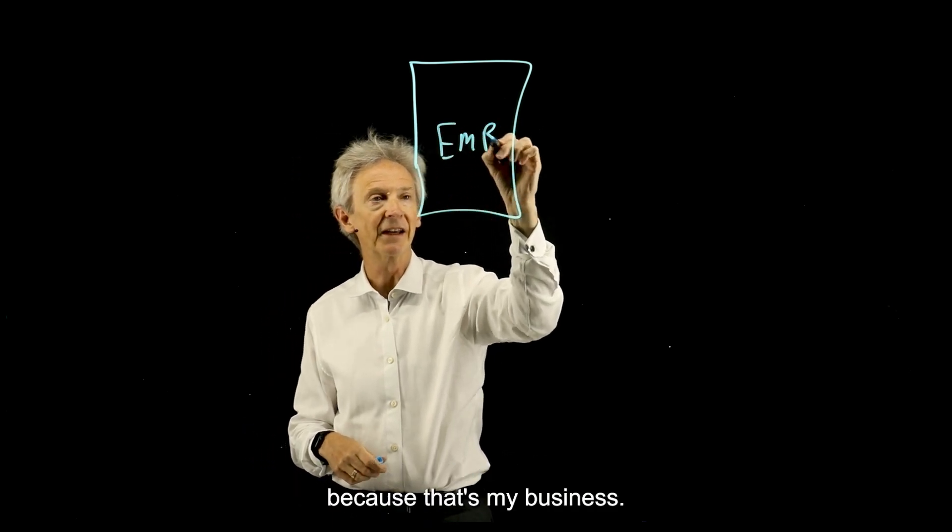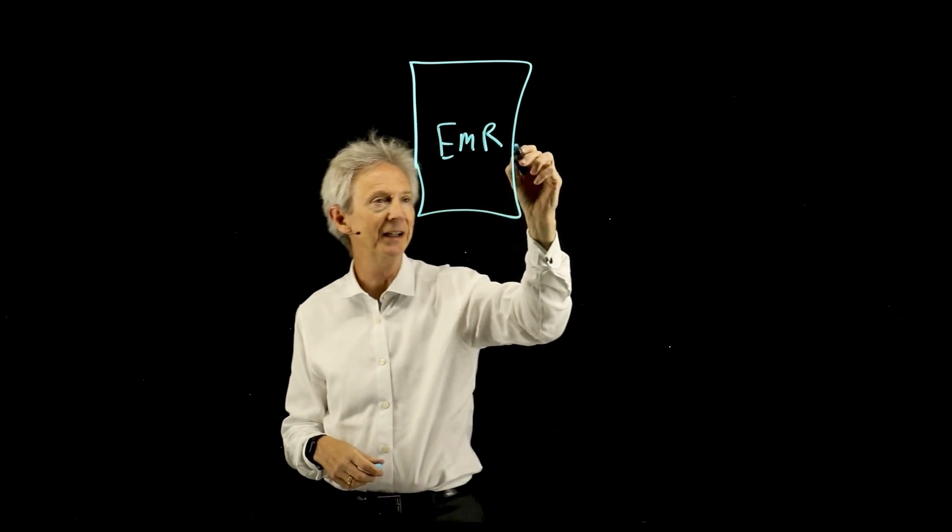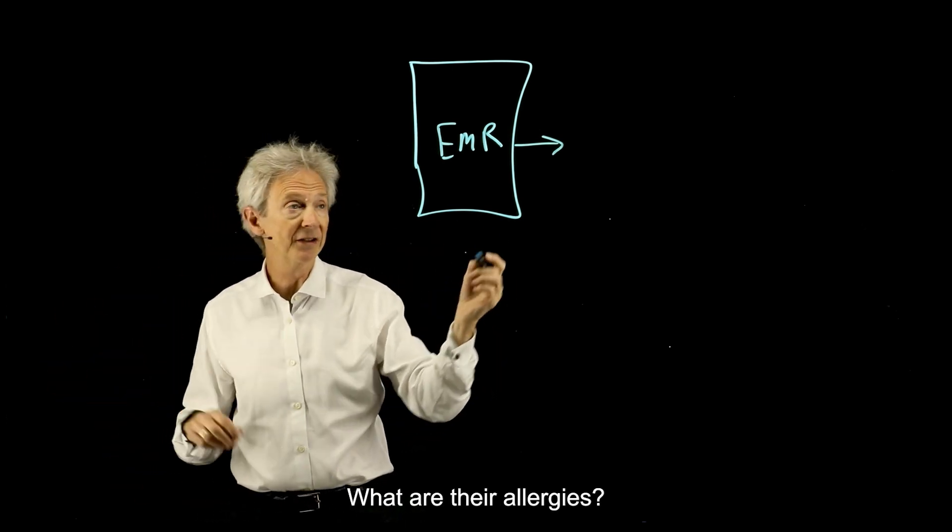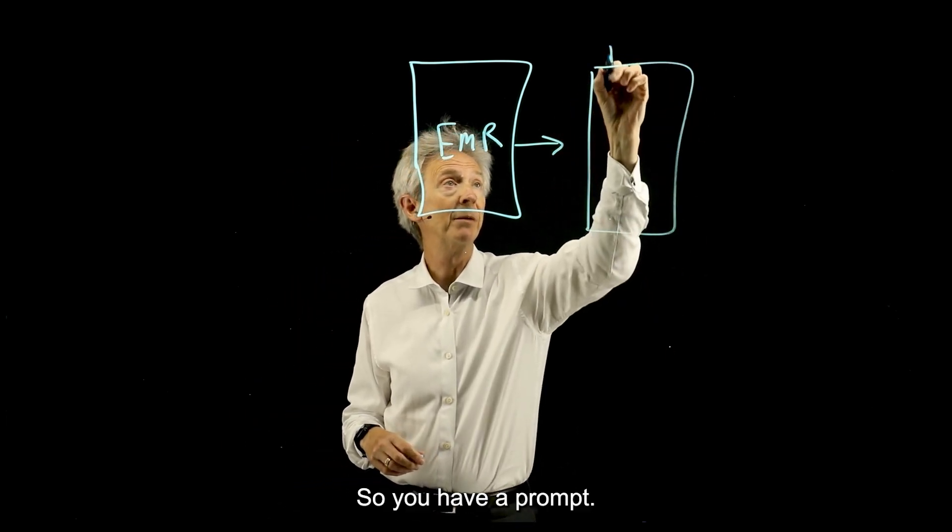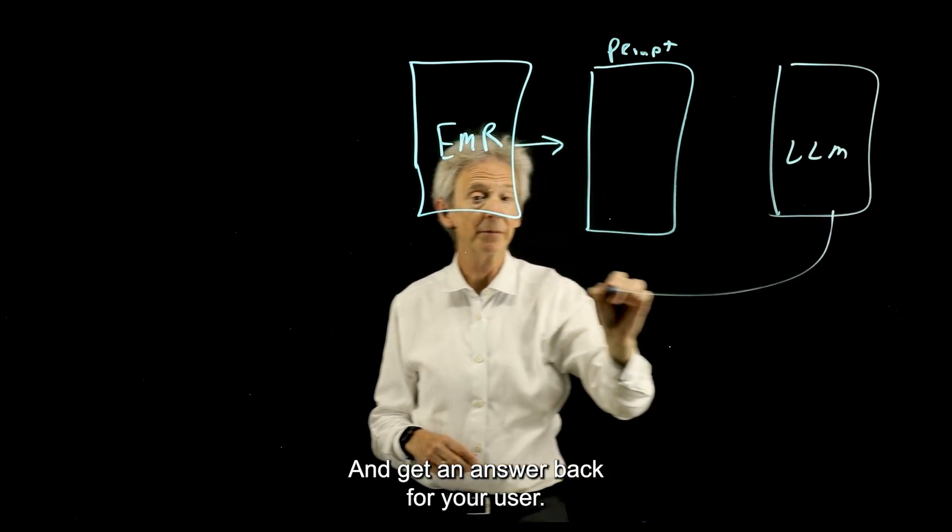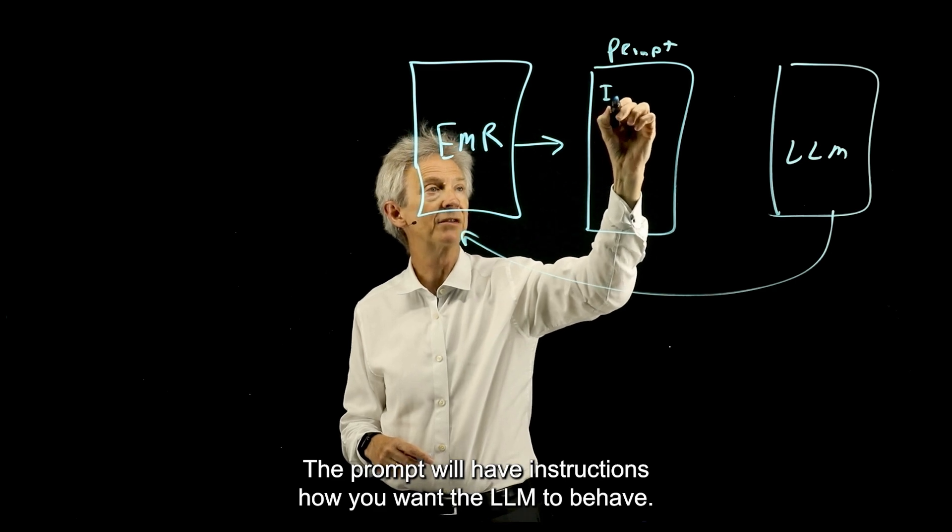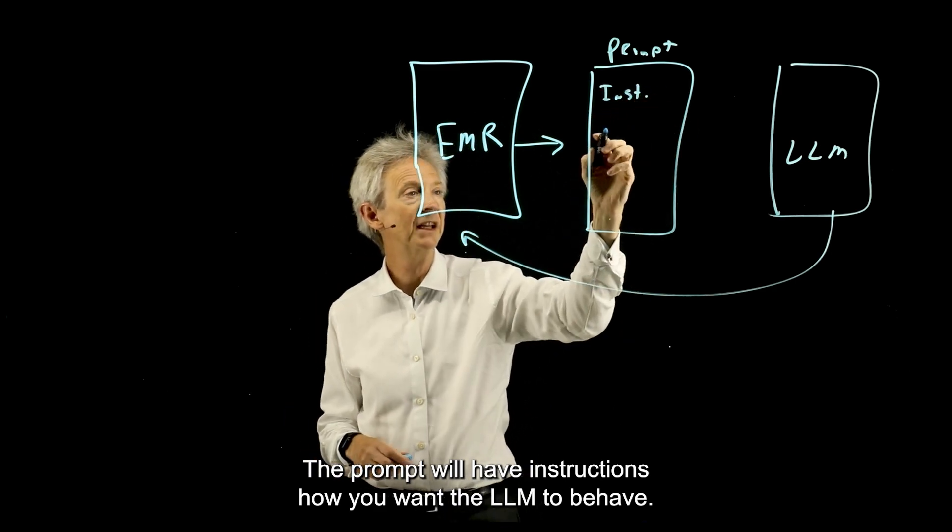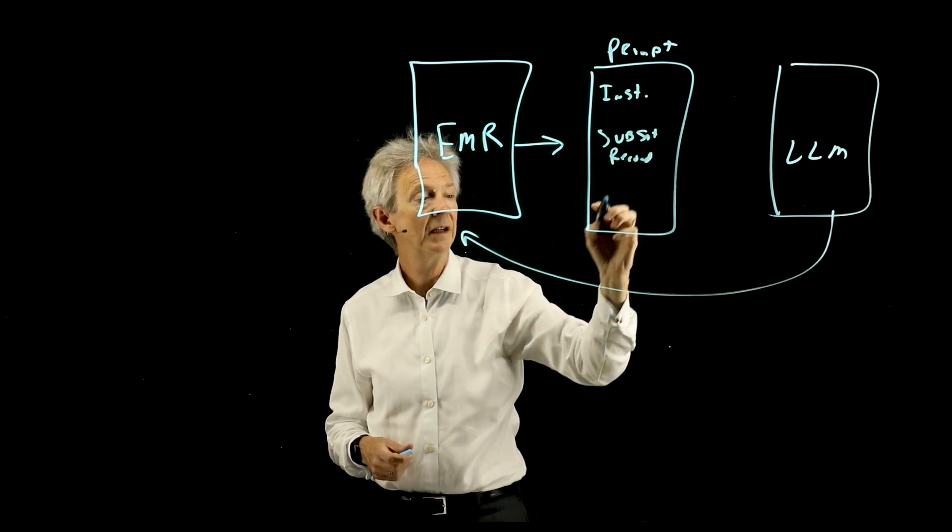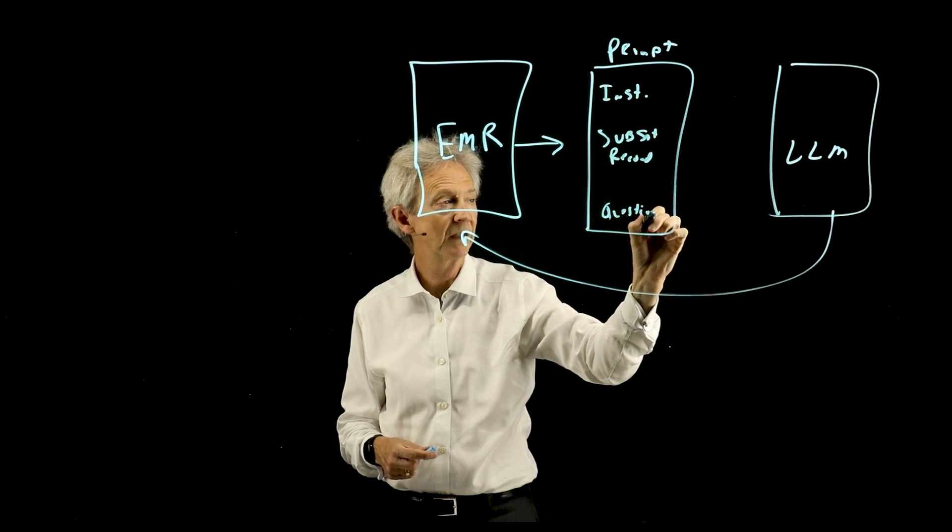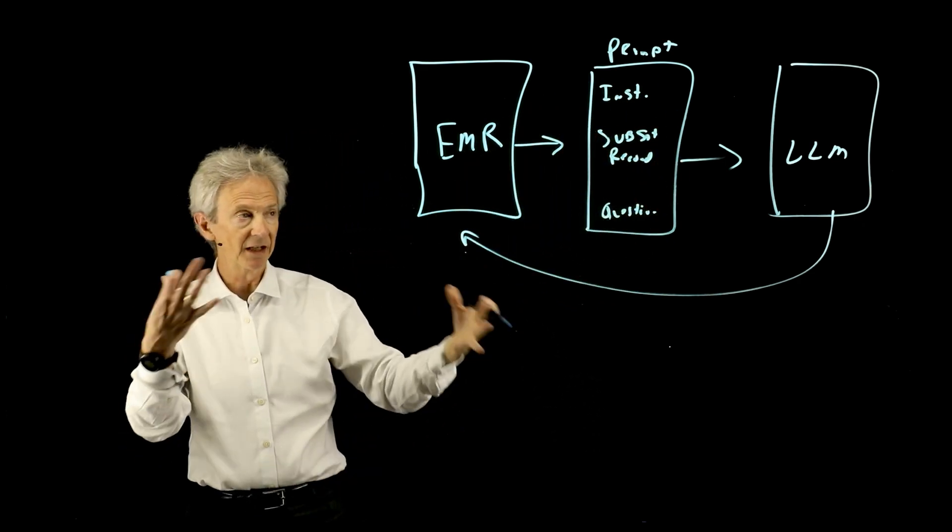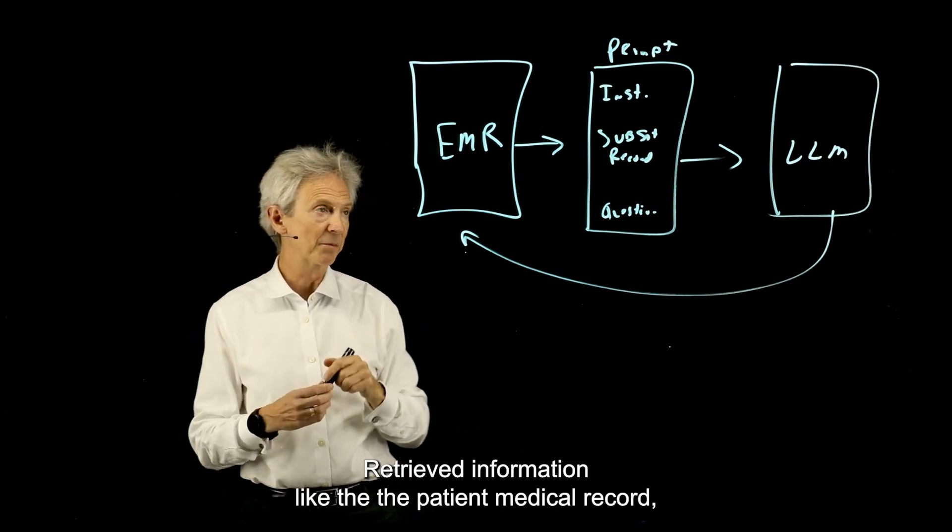So let's say, I'm going to do the healthcare case because that's my business. So you're in electronic medical record. You want to build a system that a physician can ask questions like, has this patient been in here before? What are their allergies? Things like that. So you have a prompt that you want to send to the LLM and get an answer back for your user. The prompt will have instructions how you want the LLM to behave. It'll actually have a subset of the record. And then it'll have the question itself.